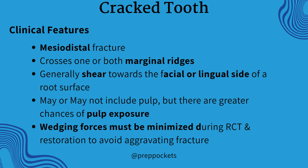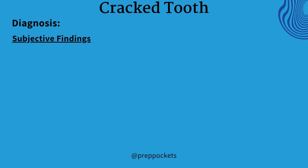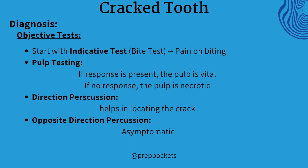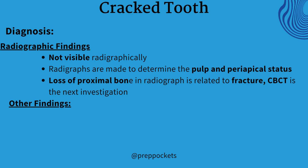There are greater chances of pulp exposure. Wedging forces must be minimized during RCT and restoration to avoid aggravating the fracture. The patient will feel sharp and brief pain on mastication and biting, and pain and sensitivity to cold. There will be slight to severe continuous pain with irreversible pulpitis, showing involvement of pulp. There may be signs of acute apical abscess, with or without a draining sinus tract and swelling. Objective testing includes a bite test indicating severe pain on biting. Pulp testing shows no response if the pulp is necrotic, and a response if it is vital. Direct percussion on the tooth helps locate the crack; however, there are no signs in the opposite direction percussion. There are no visible signs on radiographs, but radiographs are done to determine periapical and pulpal status.